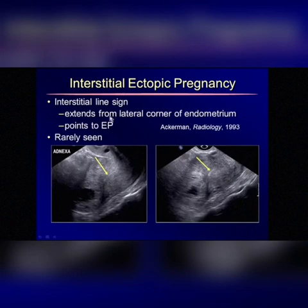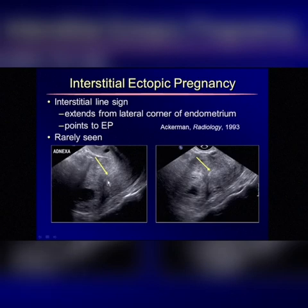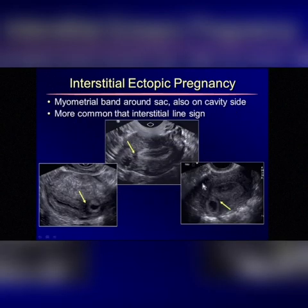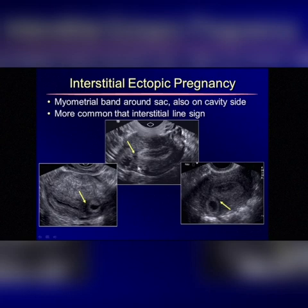Years ago, Ackerman described the interstitial line sign, which is a line that extends from the endometrial cavity and points to the ectopic gestational sac. However, in our experience, this is quite a rare sign and very difficult to see. You can look for it — we always do — but I think what is more important is to look for a hypoechoic band of myometrium between the endometrial echoes and the ectopic gestational sac.